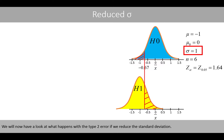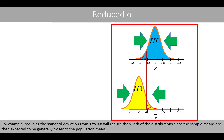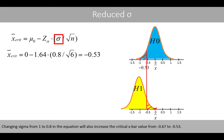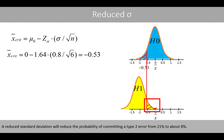We will now have a look at what happens with the type 2 error if we reduce the standard deviation. For example, reducing the standard deviation from 1 to 0.8 will reduce the width of the distributions, since the sample means are then expected to be generally closer to the population means. Changing sigma from 1 to 0.8 in the equation will also increase the critical x-bar value from negative 0.67 to negative 0.53. A reduced standard deviation will reduce the probability of committing a type 2 error from 21% to about 8%.